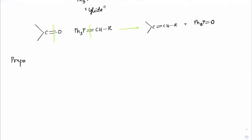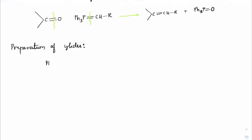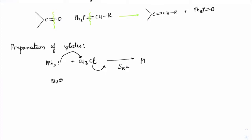Now let's see how we prepare the ylide. Ph₃P — triphenylphosphine — has one lone pair. If it reacts with CH₃Cl, the lone pair attacks by an SN2 mechanism, acting as a nucleophile on the substrate and removing Cl⁻. We get Ph₃P⁺–CH₃.